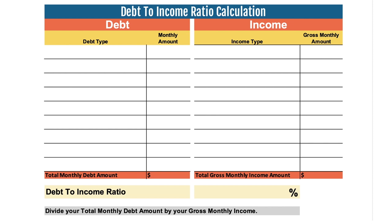That will give you your current debt-to-income ratio. If it is really high or over 43%, don't worry — throughout this course we're gonna work at getting your debt down and increasing your income, which can have a huge impact on your debt-to-income ratio. You can do this calculation at any time, and if you're considering a mortgage in the future, this is a great way to know your ratio before you go apply for the loan.